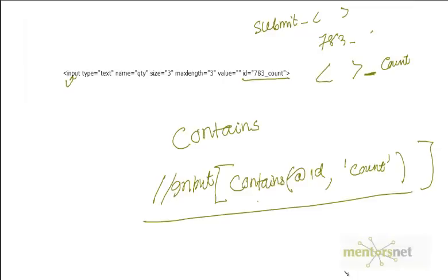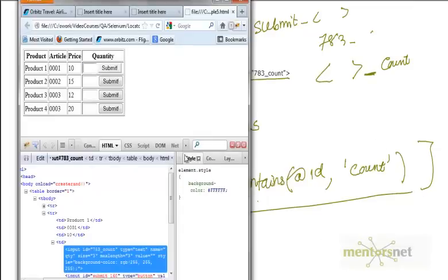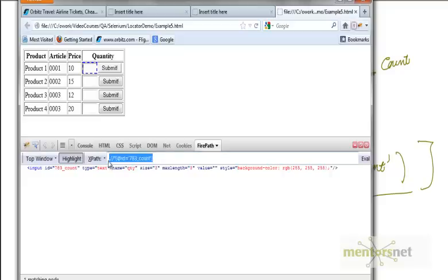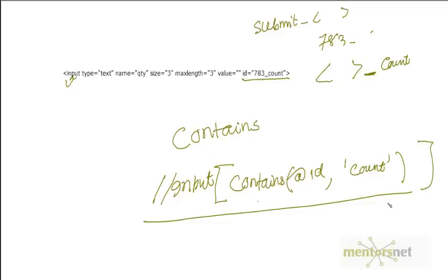This is how you handle dynamic values. If you are overly dependent on tools like FirePath, it is going to fail you. For example, FirePath might suggest id equals '783count', but that is wrong because if you use that, it's going to fail since this is dynamic. You can use FirePath to verify if a thing is working, but you should not always blindly follow it. This is why I wanted to explain dynamic content handling in this video.